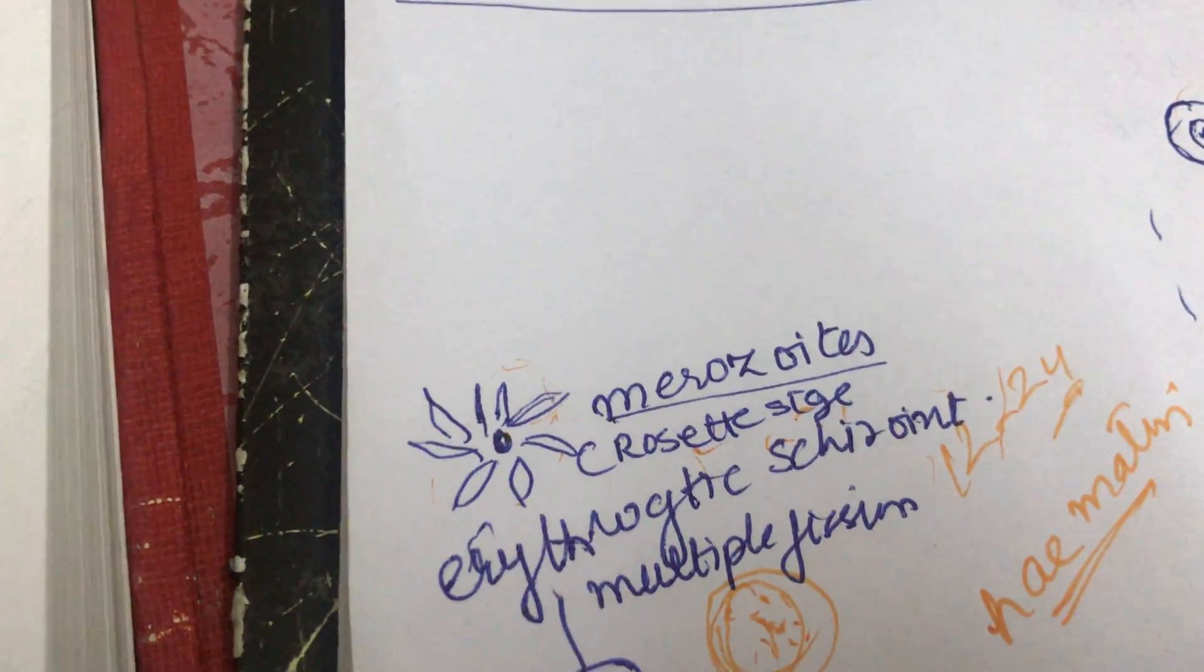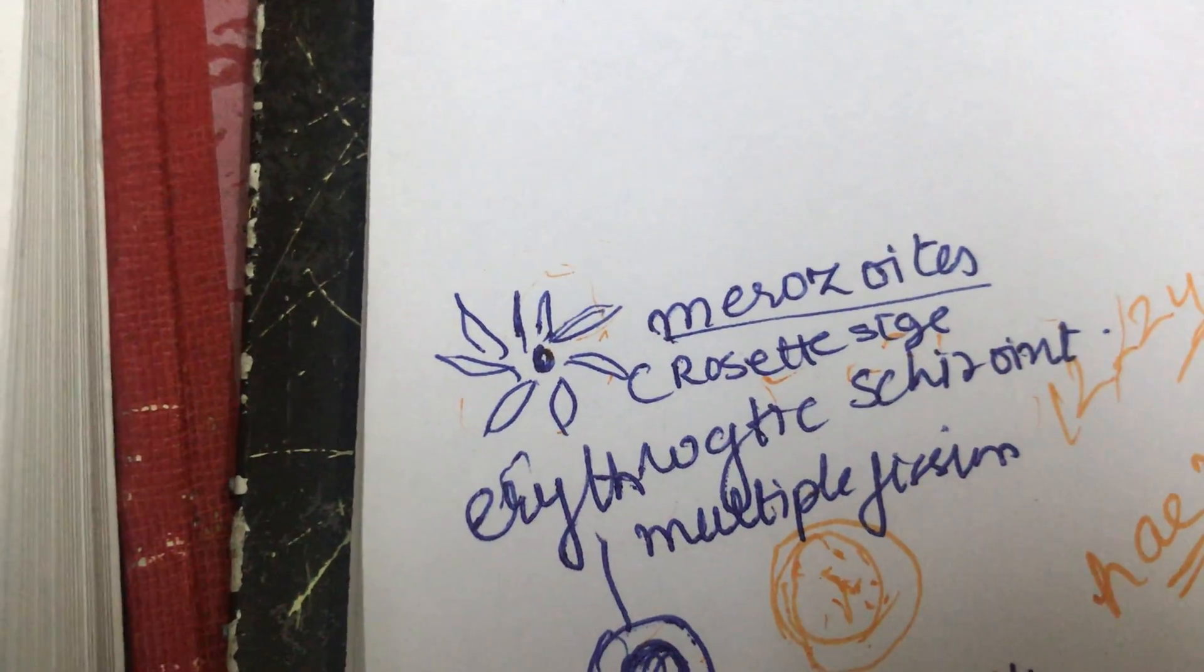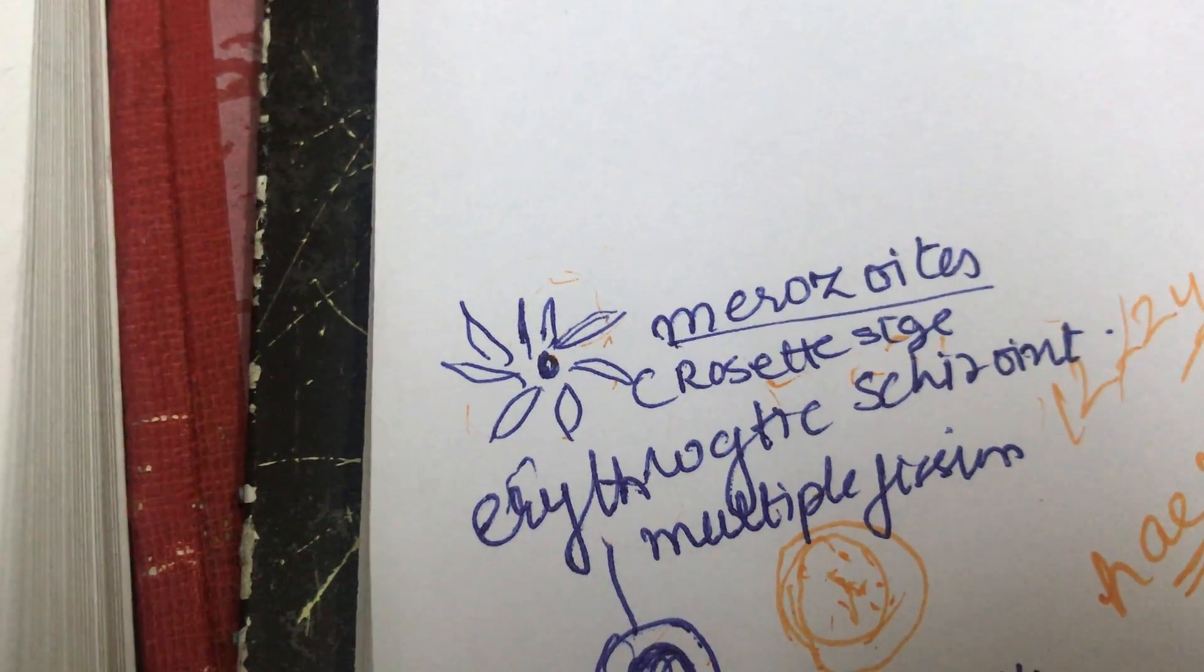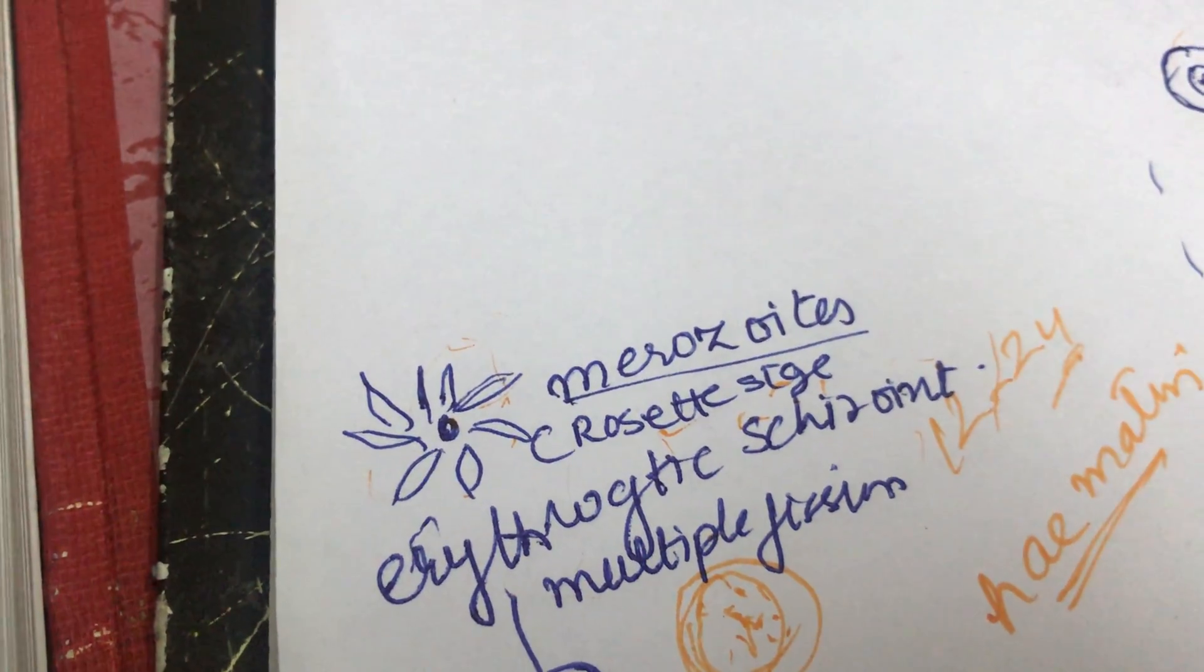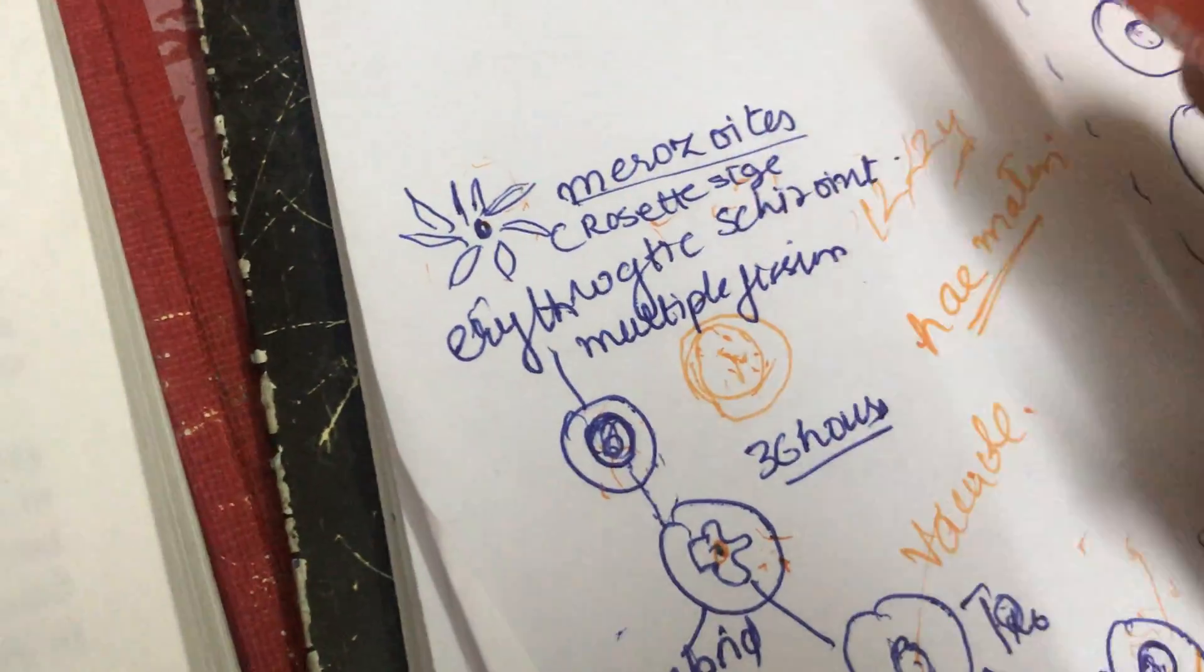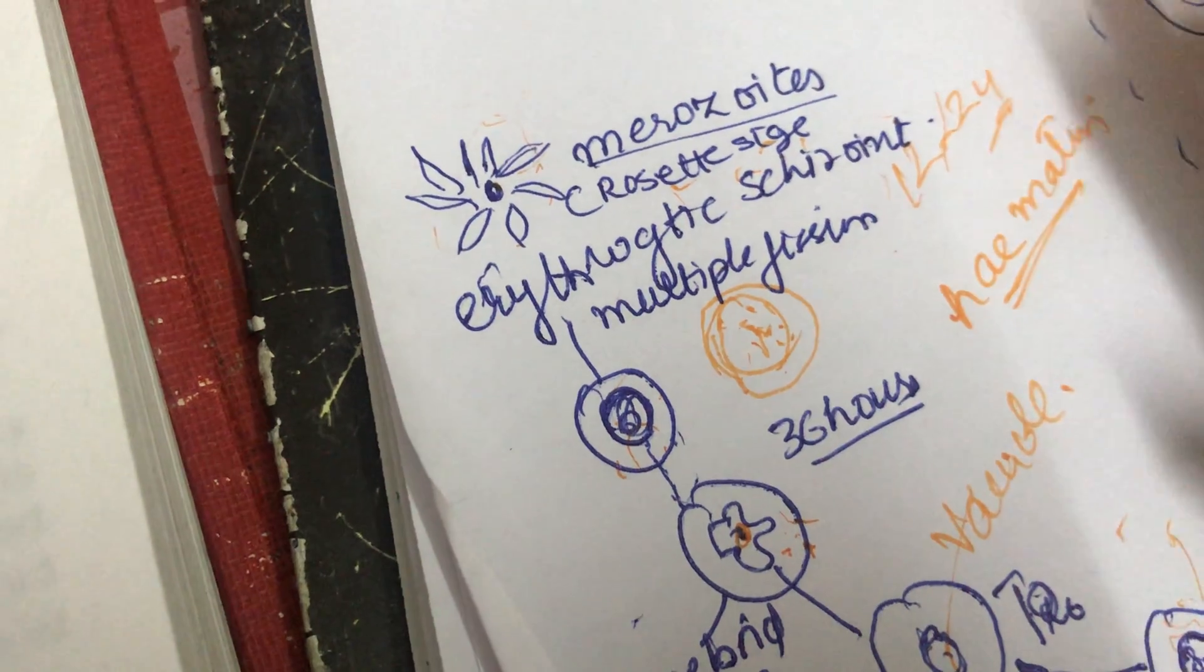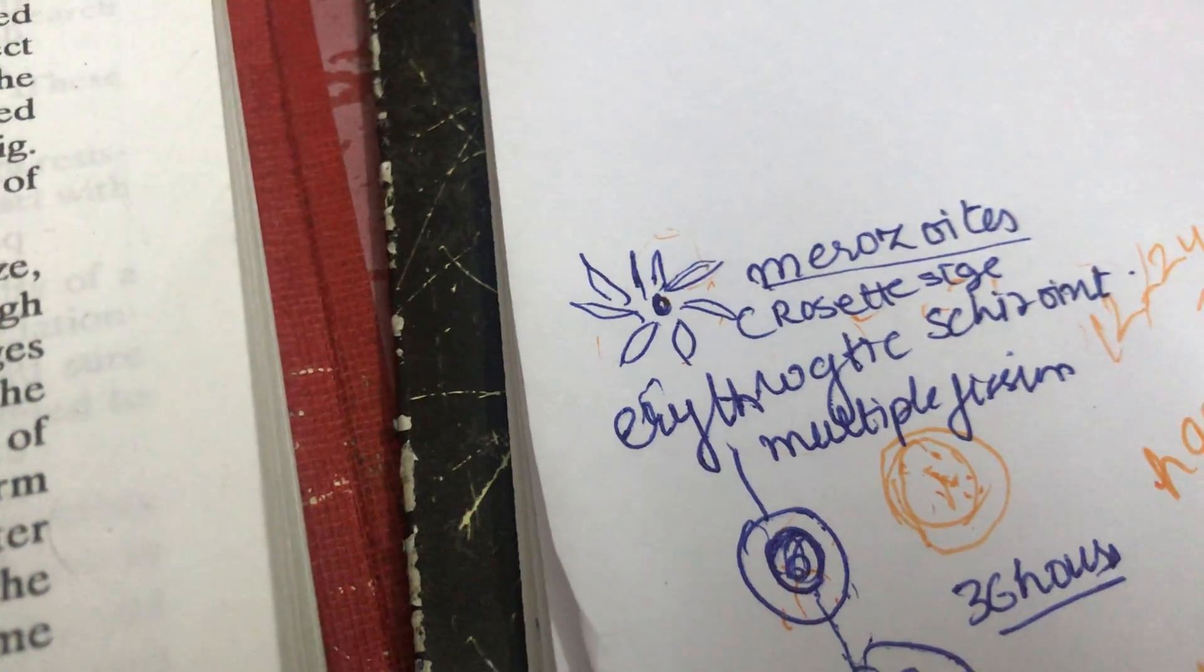If you have a parasite in your body and your immune system is strong, you can control it so that you don't have symptoms. This means the parasite multiplies 5-6 times before symptoms appear.